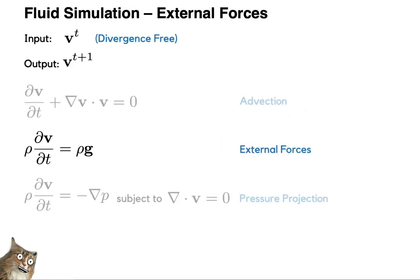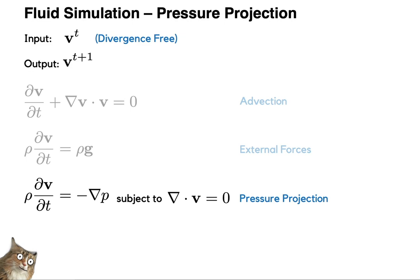We update the velocity directly using the acceleration due to gravity, without moving our particles. Here's our particle after advection, along with the force due to gravity — all we do is update the velocity stored on that particle. And that's external forces done, which means we can move on to the central component of a fluid simulator: the pressure projection.